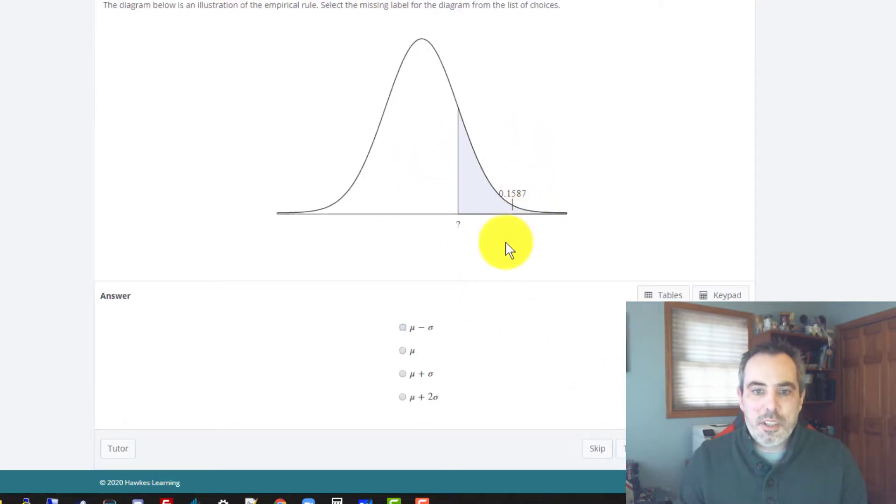A couple other ones that they're going to ask, like, where is this? Well, here is 15%. Visually, I'm looking at it and saying, 15% on both sides. That means over here, I've got another 15%. That's like 30% already out there, which means this has to be one standard deviation away.